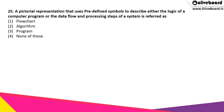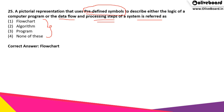A pictorial representation that uses predefined symbols to describe either the logic of a computer program or the data flow and processing steps of a system is referred to as what? Out of the following options, what is the correct answer? It is option 1, that is a flow chart.